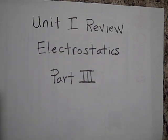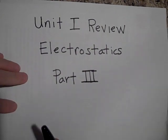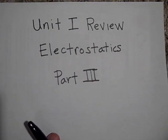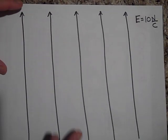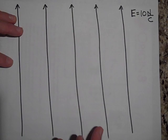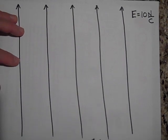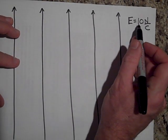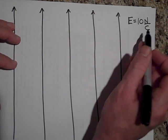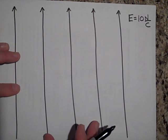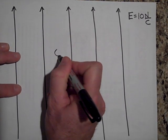Okay, here we are back with Unit I review of electrostatics, section of part three. Okay, so we have this uniform electric field. If I put a charge, it's 10 newtons per coulomb - that's the electric field strength.